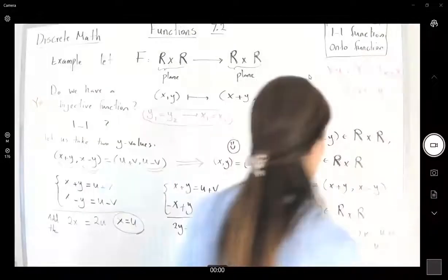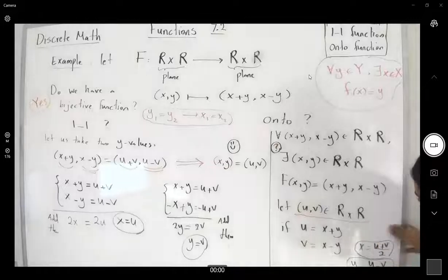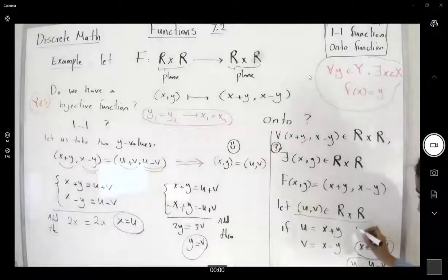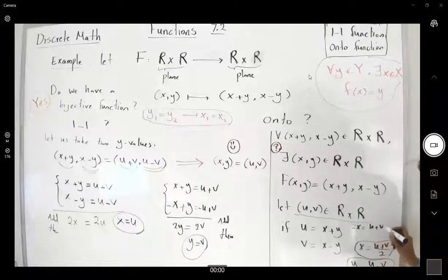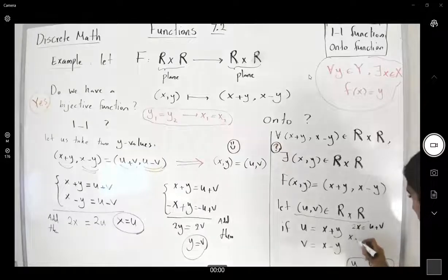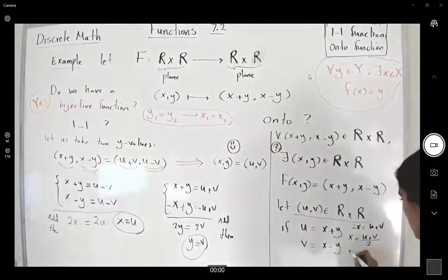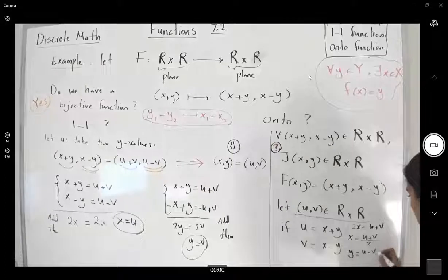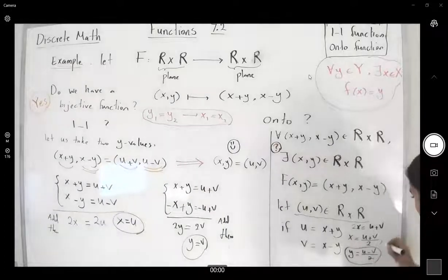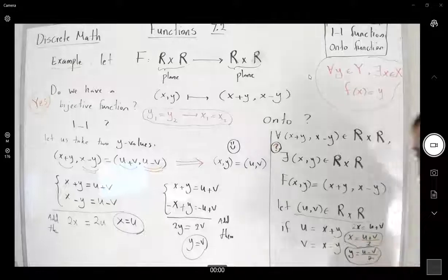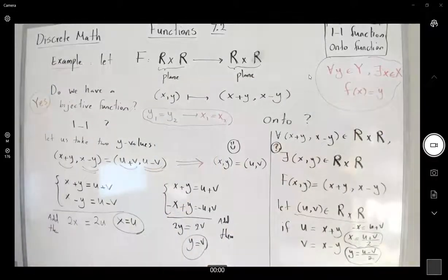So here: 2x = u+v, x = (u+v)/2, and y = (u−v)/2. This is a bijection. Thank you.